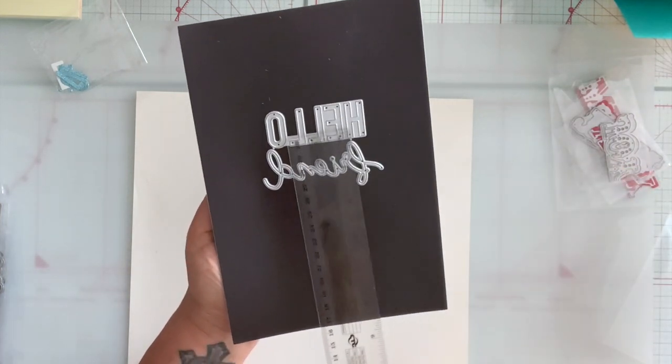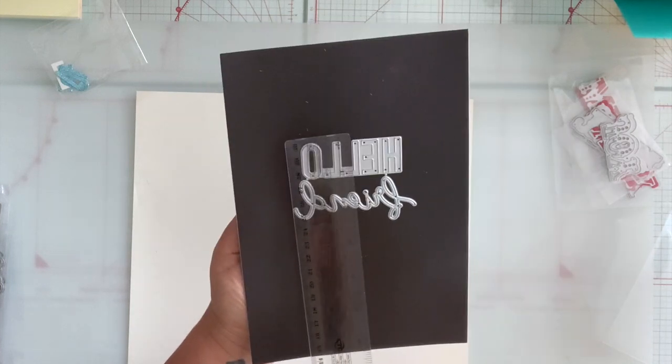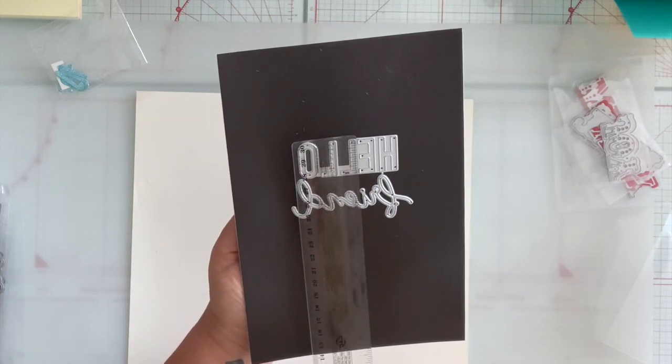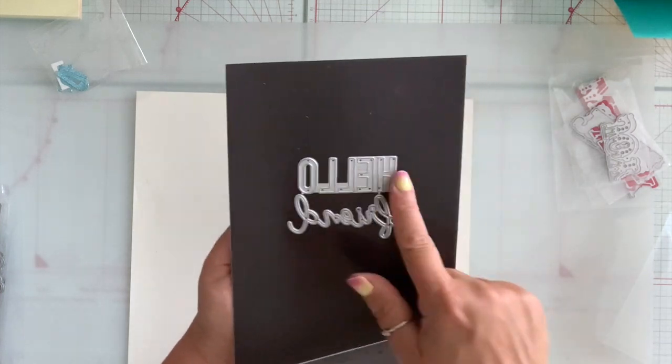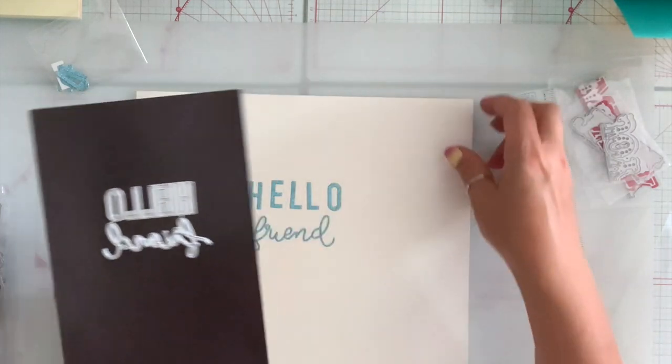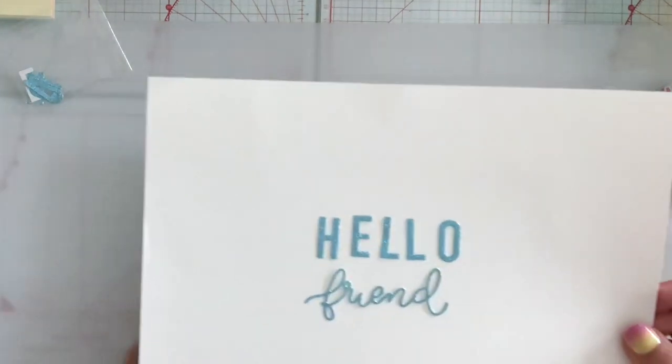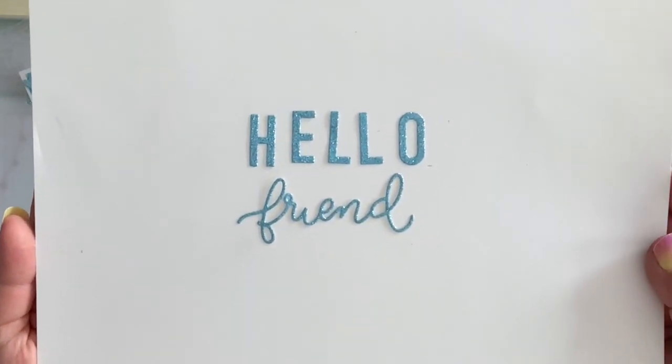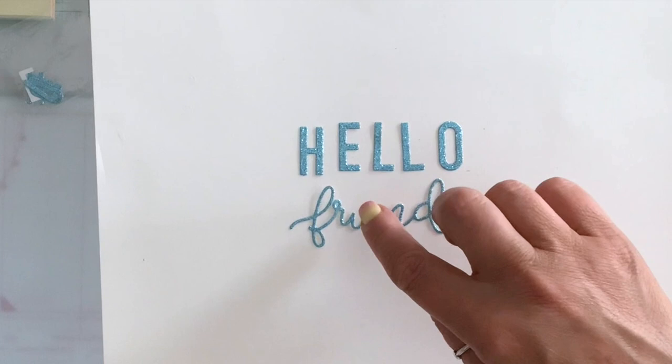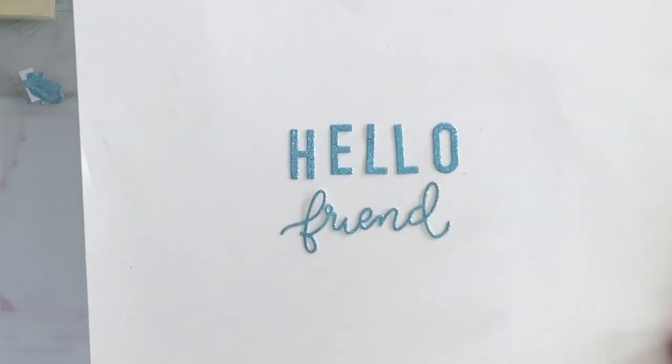Three inches by one and a quarter for the friend and the hello is one inch tall and of course it depends how far you put the letters from each other. This is what it looks like. Also comes with the dot for the eye, but it's in the bag.